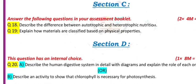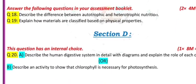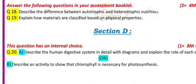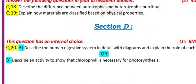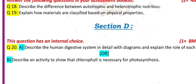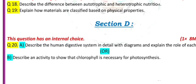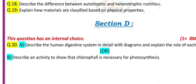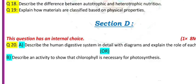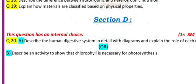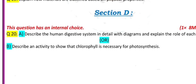Section C: Answer the following questions in your assessment booklet. For these two questions, each one carries four marks, and on the whole in this section you can expect eight marks. Question 18: Describe the difference between autotrophic and heterotrophic nutrition. Question 19: Explain how materials are classified based on physical properties.